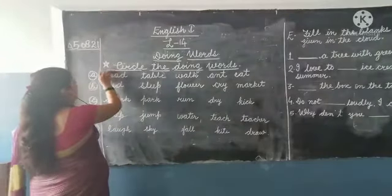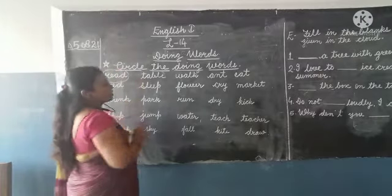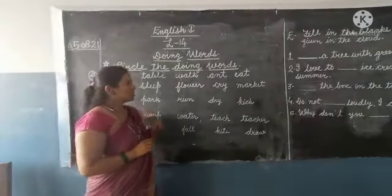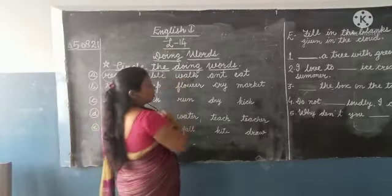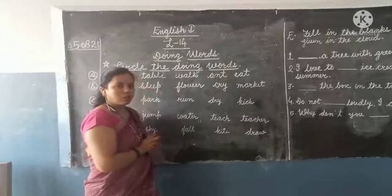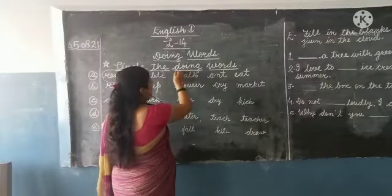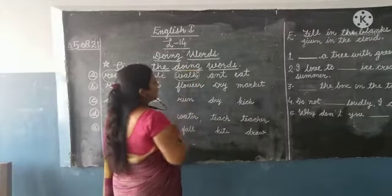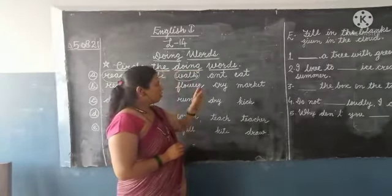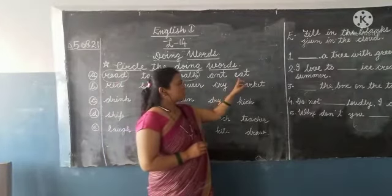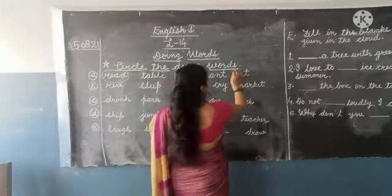'Table' is not a doing word - it is a thing name, so we will not circle it. 'Walk' is also a doing word - it is an action word, so we will circle it. 'And' is not a doing word, so we will not circle it. 'Eat' is also an action word or doing word, so we will circle it.